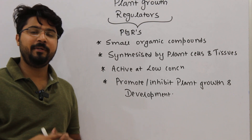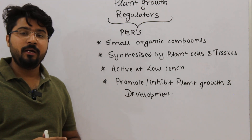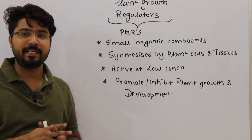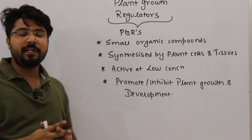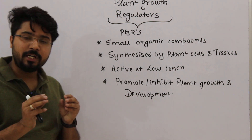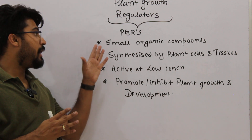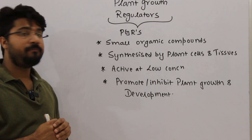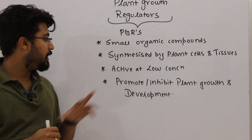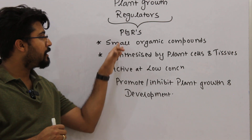Hello everyone. I'll be starting off with a very basic topic in plant physiology which is quite an important area for CSIR NET, DBT JRF, as well as GATE examinations. This particular area, which everyone is familiar with, is called Plant Growth Regulators or PGRs. The basic definition: they are small organic compounds synthesized by plant cells and tissues, active at low concentrations, and can either promote or inhibit plant growth and development.